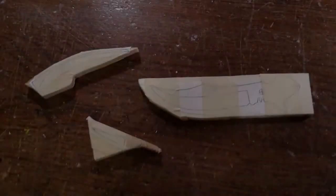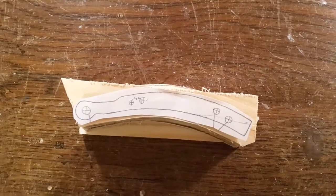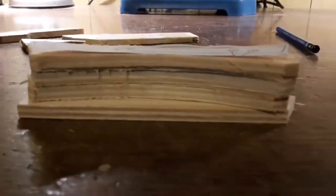Now cut the templates out and stick them to the plywood. When you have to cut out many equal pieces, it's a good idea to lay some pieces onto each other and cut them out simultaneously.